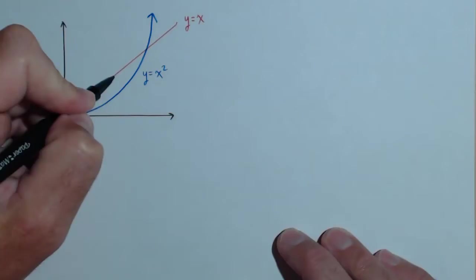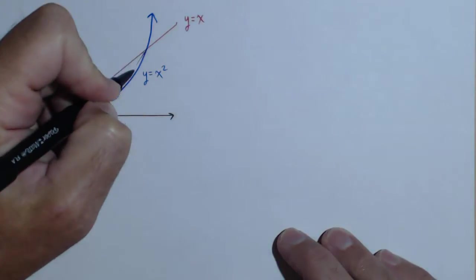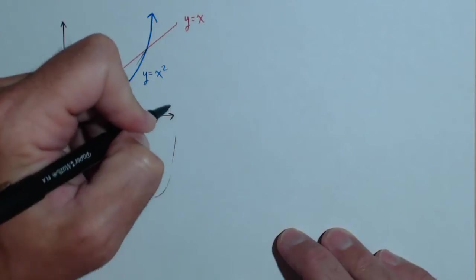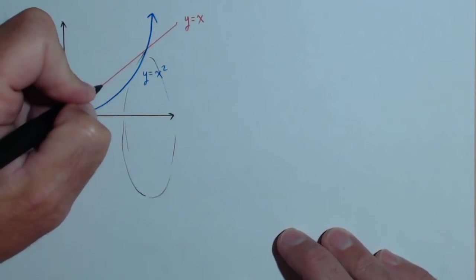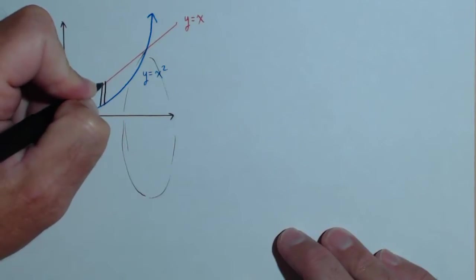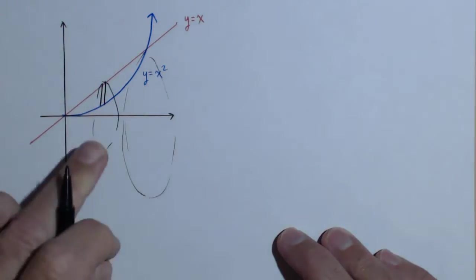Now, we're going to be revolving this first around the x-axis. So if you want to kind of imagine what that looks like, it's going to go around like this. So when we take our slice, that's the slice that will be getting revolved around the x-axis.